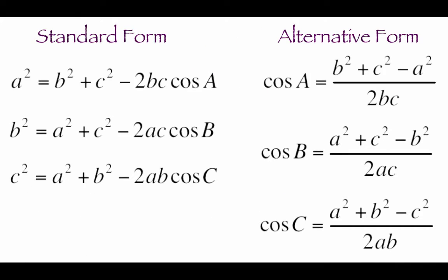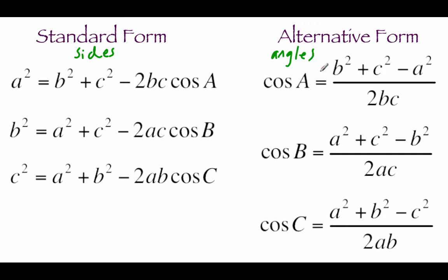When we're looking at the law of cosines, there's two different forms. There's the standard form, which is really helpful when we're looking at finding sides of our triangle, because we've got lowercase letters on the left-hand side all by themselves, and those lowercase letters represent sides. There's also the alternative form, which is basically just the standard form with some algebraic manipulations done to rearrange things. The alternative form is really helpful when we're looking to find the measure of angles inside of our triangle, because we've got angle information all by itself on the left-hand side.